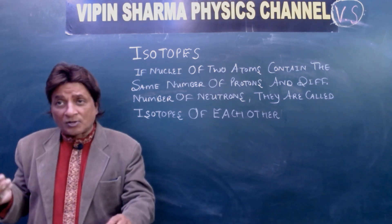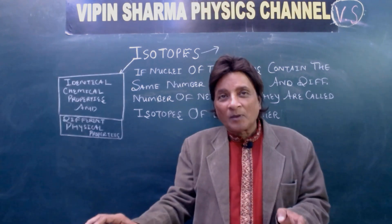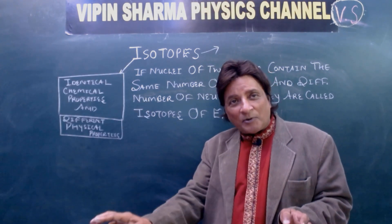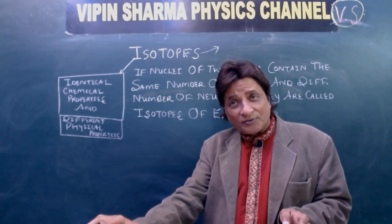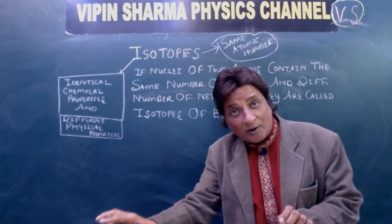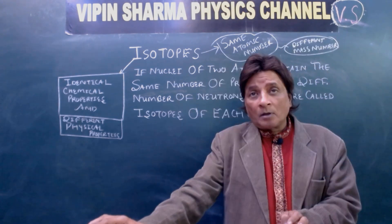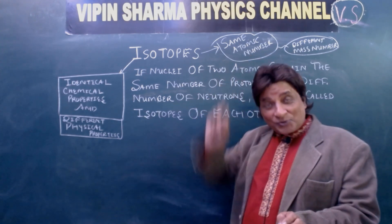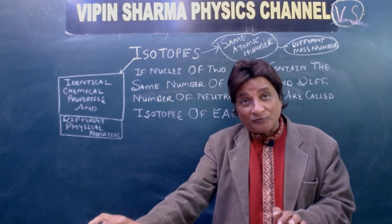Isotopes have identical chemical properties and different physical properties — same atomic number but different mass number. Now, before I proceed further, I'm going to tell you something about nucleides.